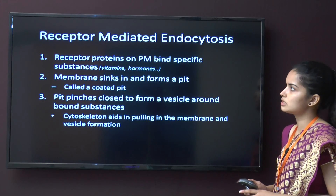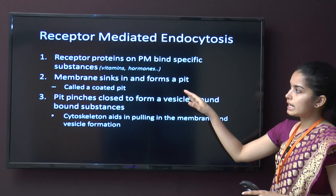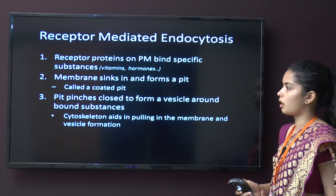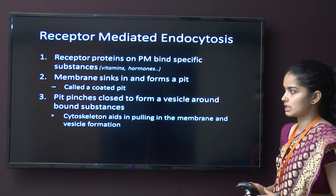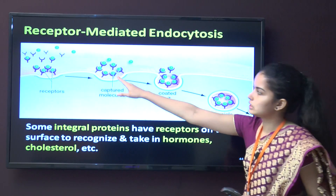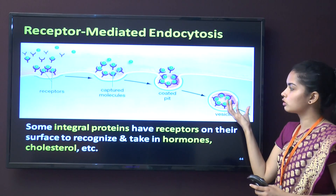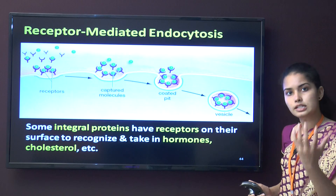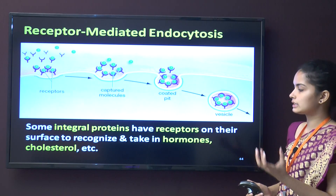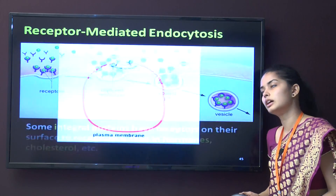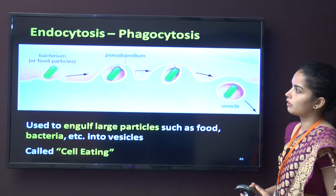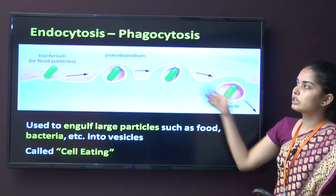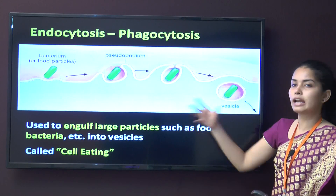Receptor-mediated endocytosis is a highly specific form of endocytosis. Receptor molecules on the outside of the cell bind a specific substance and bring it into the cell. The membrane sinks and forms a pit known as a coated pit, which then pinches closed to form a vesicle. Some integral proteins with receptors on their surface recognize and take in hormones and cholesterol into the cell.